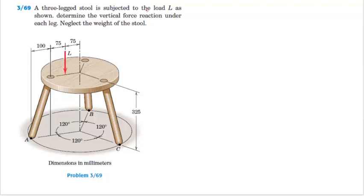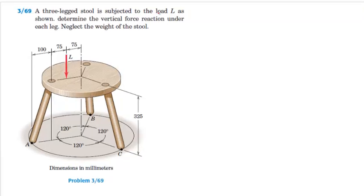In this problem we are given that a three legged stool is subject to a load L at the point given in the diagram. Given this information we are asked to determine the vertical reaction forces under each leg.